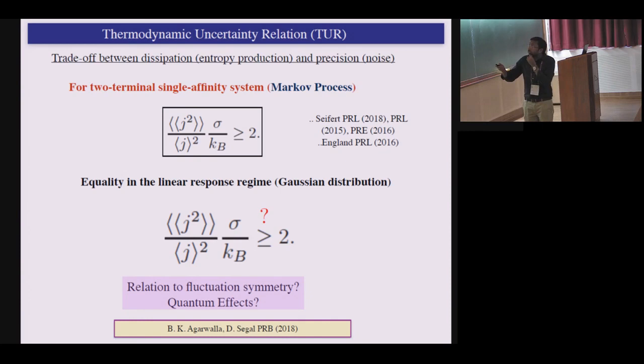And this was derived for classical Markovian systems. What people have shown, particularly this group by Udo Seifert and by England at MIT, is this sort of proof that this bound holds for as long as your underlying dynamics is Markovian, and primarily for classical Markovian systems. And you can show easily that this equality holds when your system is in the linear response, primarily if the distribution is governed by a Gaussian.